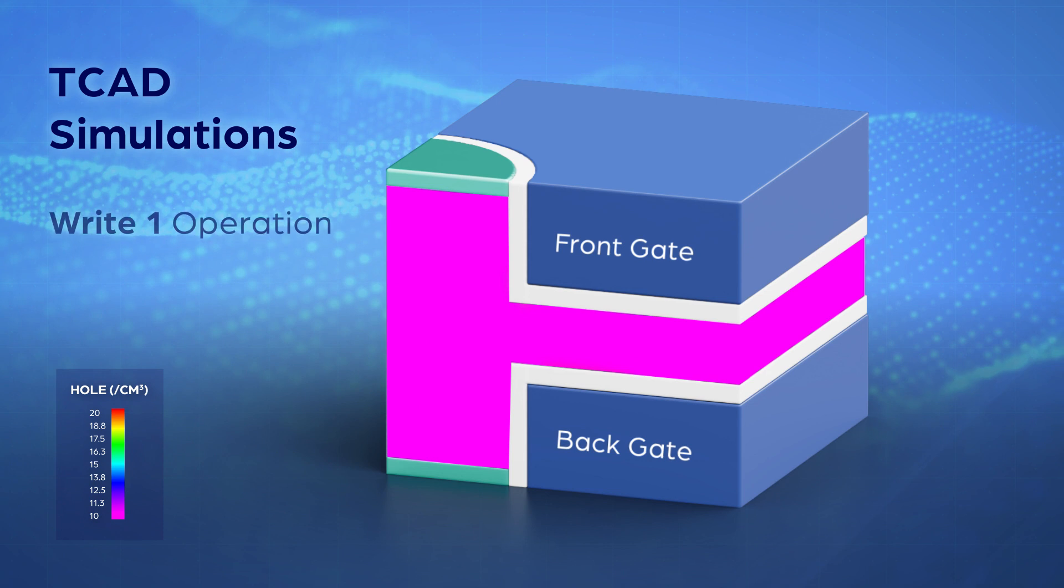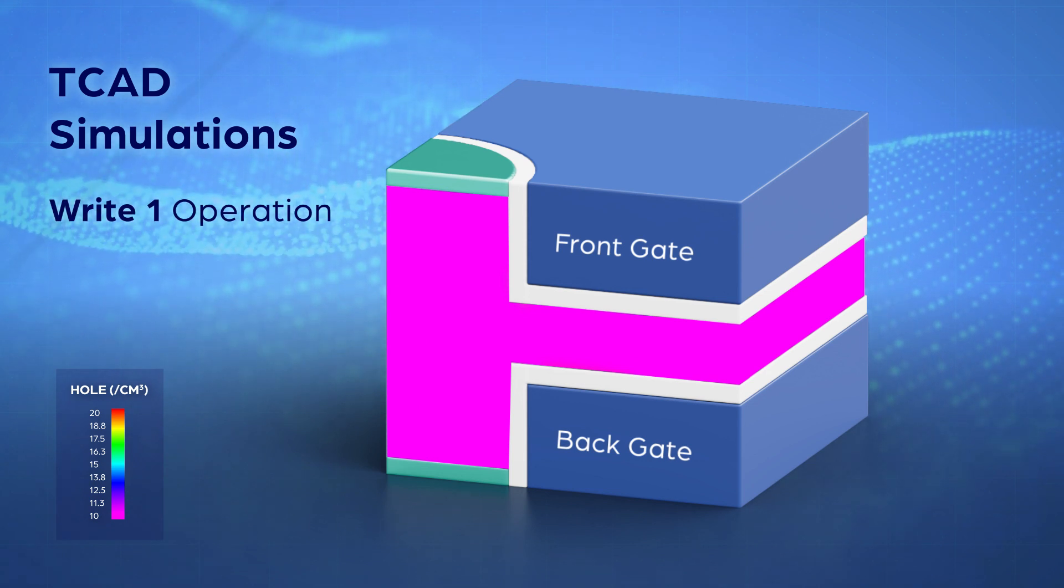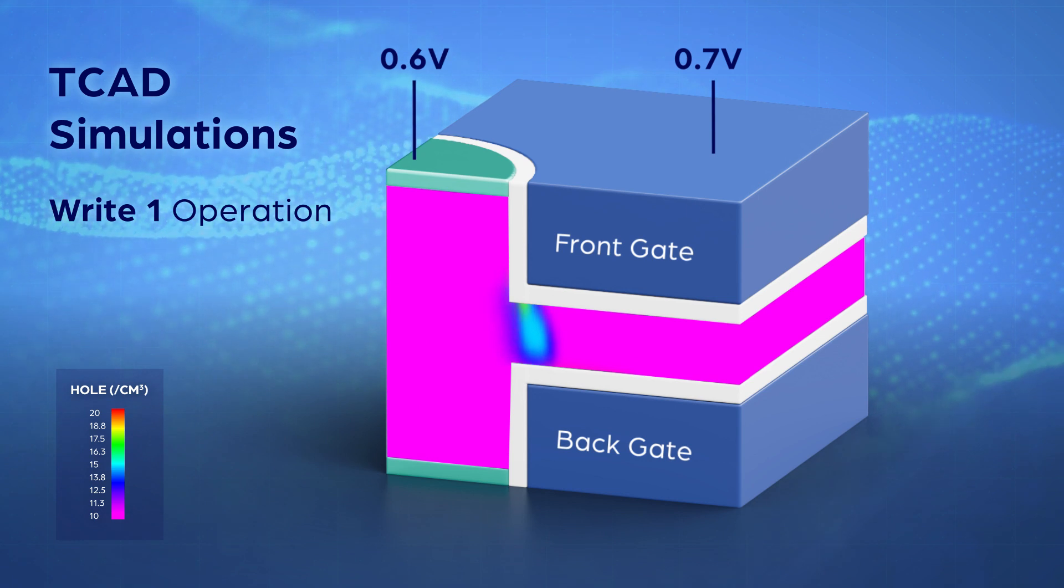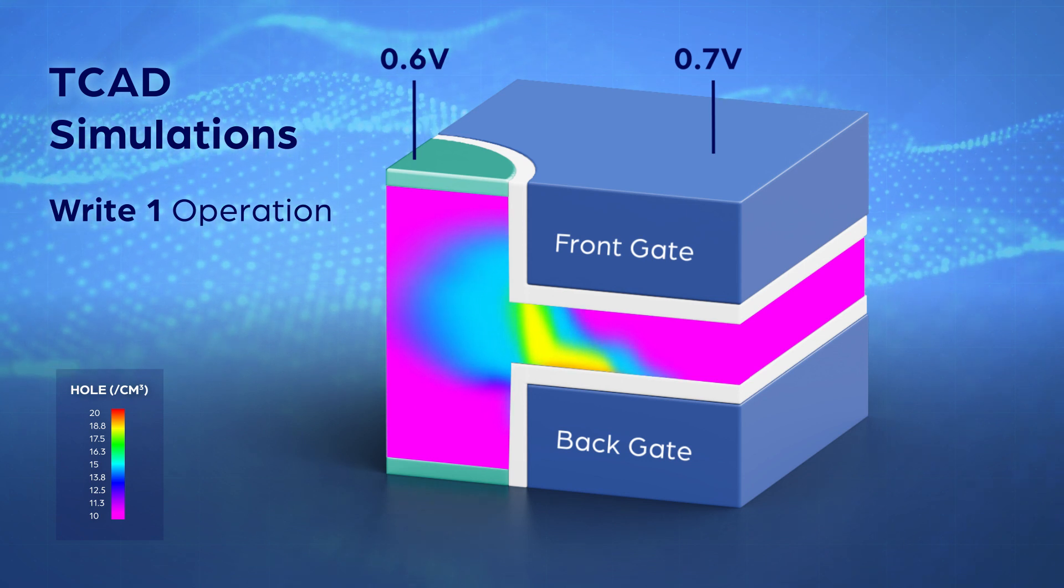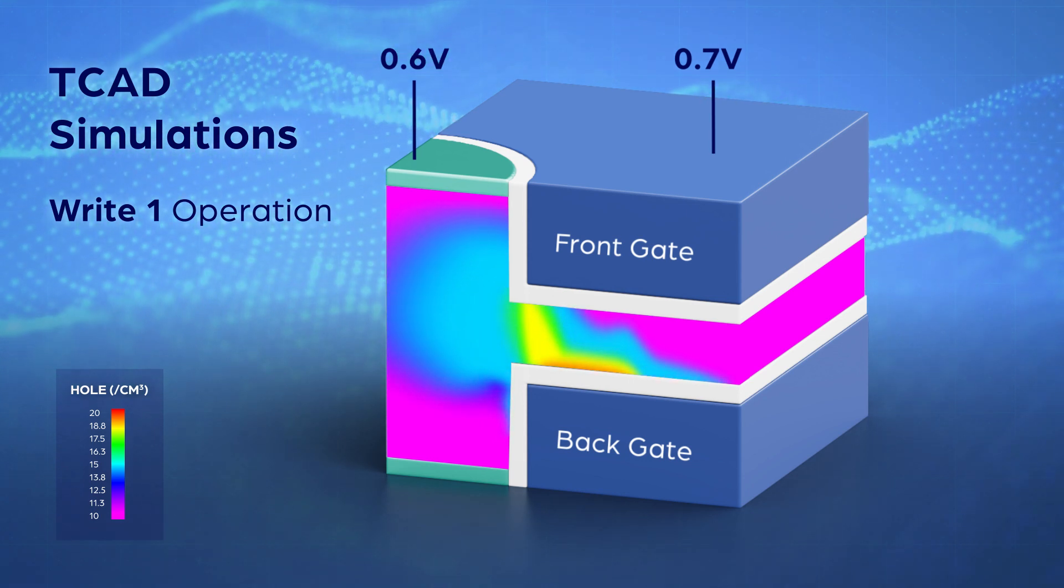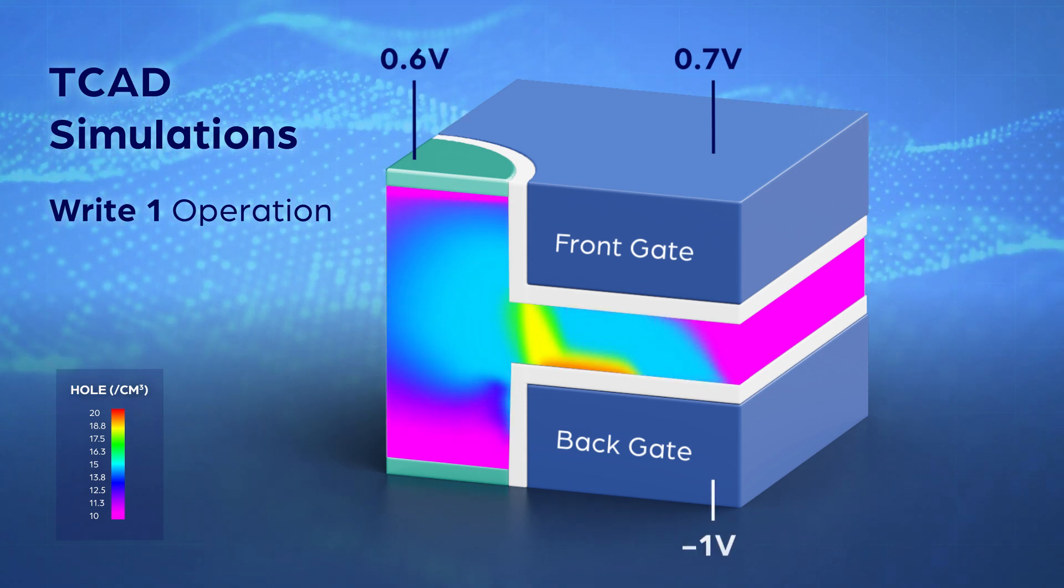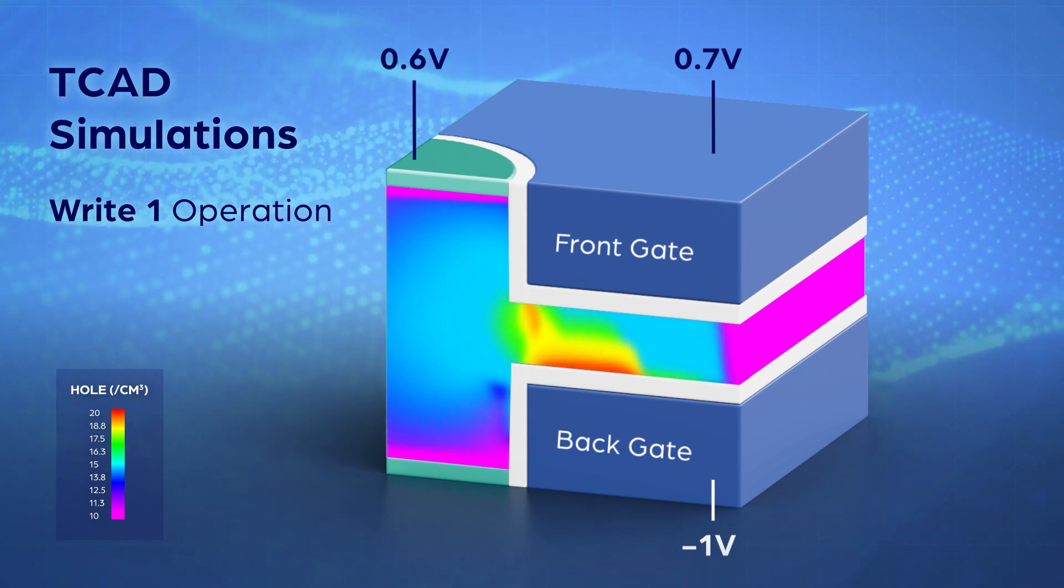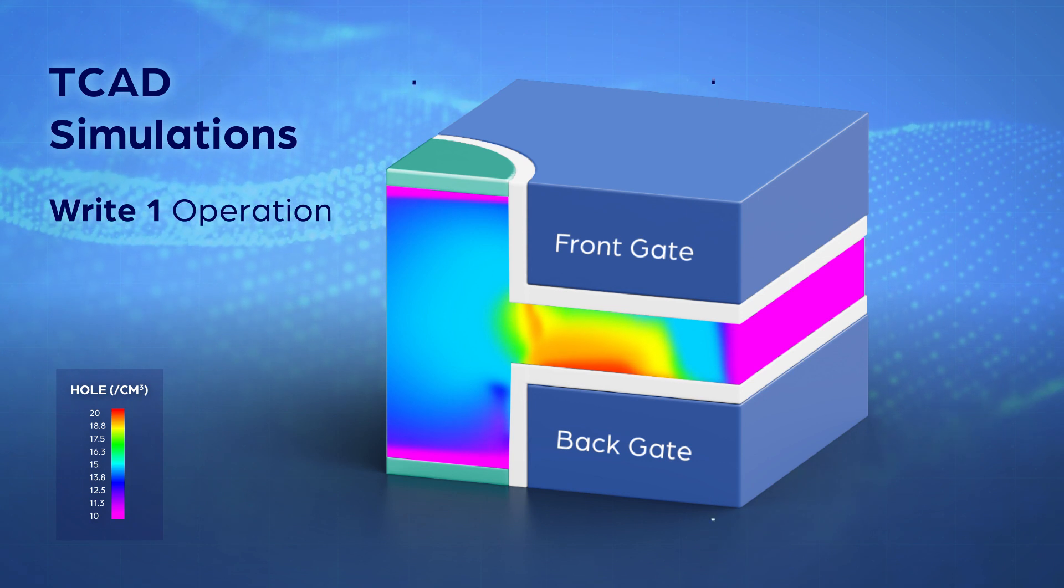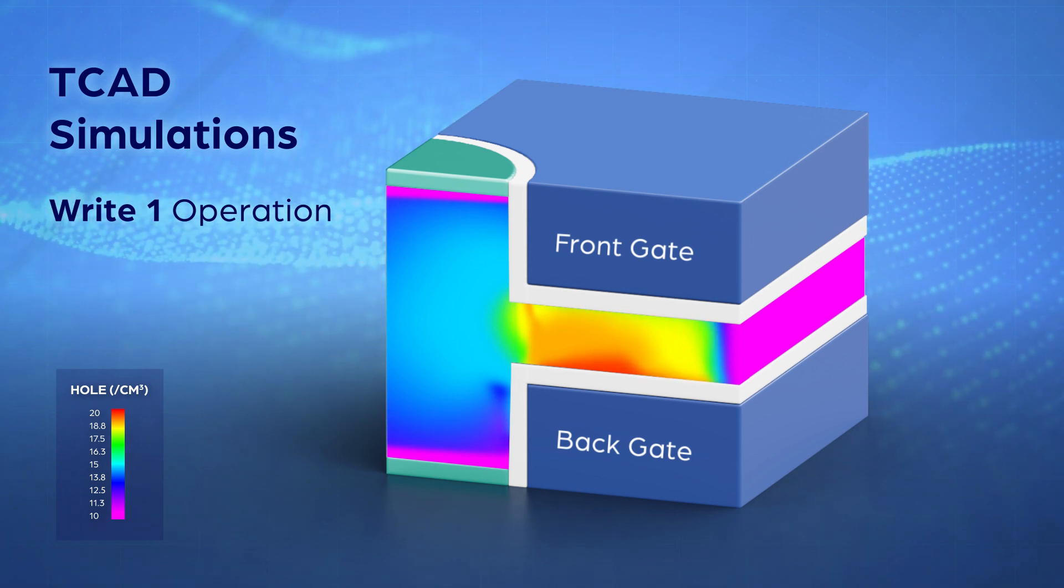To write data 1, the front gate and bit line are applied with 0.7V and 0.6V to trigger impact ionization, injecting electric holes into the floating body in 3 nanoseconds. The back gate is applied with -1V to attract electric holes. The holes stored in the floating body increase body potential, increasing the cell's read current. This state represents data 1.